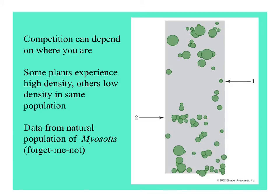Competition can depend on where you are. For example, spot number one doesn't have much competition at all, but maybe there's not much water or nutrients available there. Whereas at spot two, there's quite intense competition — it may be a very good spot to grow.